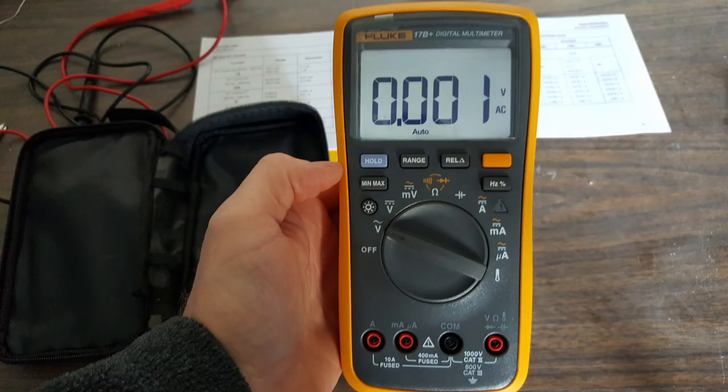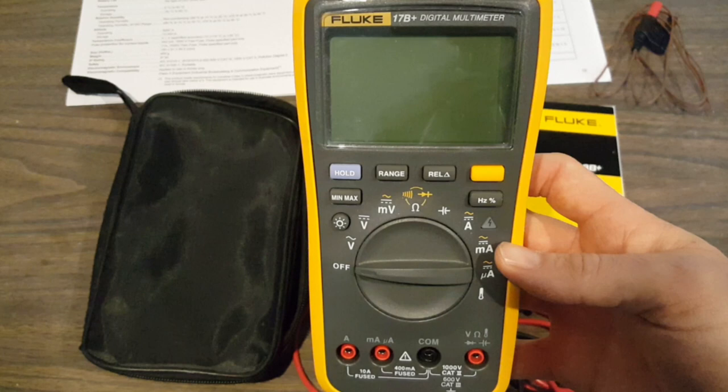And diode check. It includes a temperature in Celsius and Fahrenheit, no less, using a K-type thermocouple, and the thermocouple is included in the package. And it includes a backlight and big numbers, so we don't have to get out those bifocals or cheaters to look at this thing. And here's a link to the features on Fluke's website.